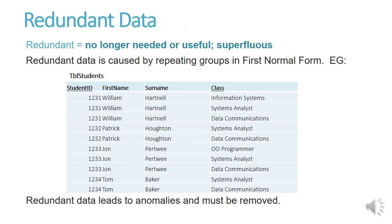Redundant data is data that is no longer needed or useful — it is superfluous. Redundant data is caused by repeating groups in first normal form. For example, in the table Students, which is a list of students and the classes they are studying, you'll see William Hartnell occurs three times. That is incorrect — it is superfluous, leads to anomalies, and must be removed.